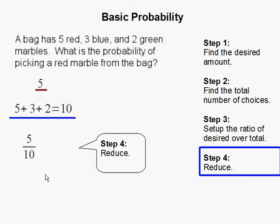And finally, the last step is to reduce. 5 over 10 can be reduced to 1 half.